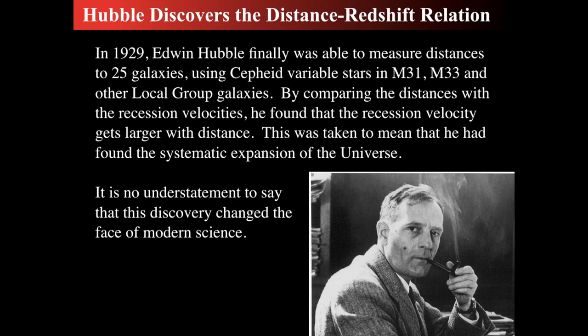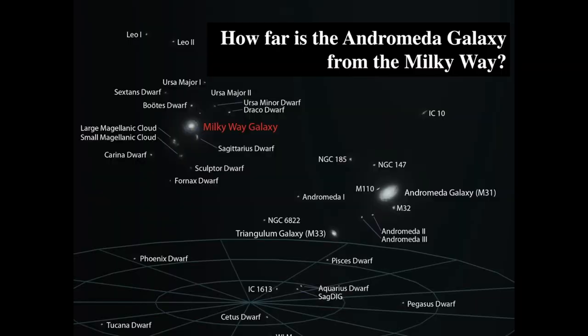In 1929, Edwin Hubble finally measured the distances to a few galaxies, including M31, M33, and some other local group galaxies. He compared the distances with the recession velocities and found that the recession velocity gets larger as you get farther away. This was taken to mean that he had found the systematic expansion of the universe — probably one of the most important discoveries of 20th century science, because it turned the study of the universe away from stories told in ancient books to being a precision science.